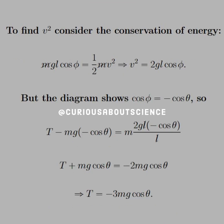But we need to find what V squared is. We can do this by considering conservation of energy, where we have the potential of the system before and the kinetic energy after. Once we set those two things equal to one another, we get that V squared equals 2GL cosine phi. But we need cosine in terms of theta, not phi.